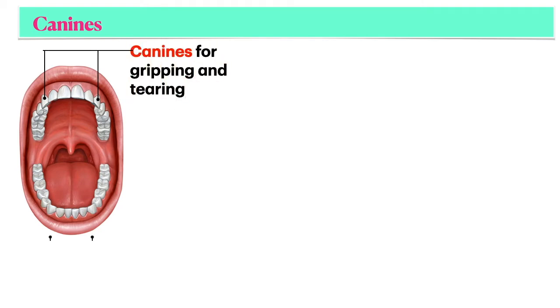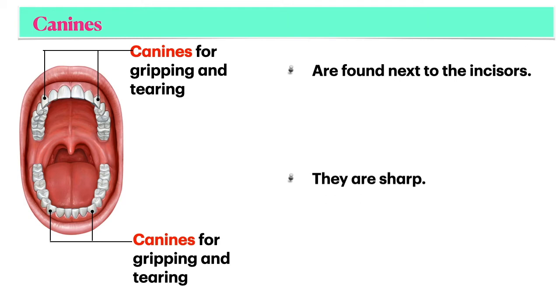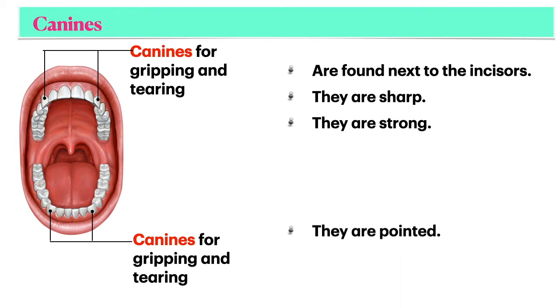Canines are used for gripping and tearing. Canines are found next to the incisors. They are sharp, strong, and pointed.